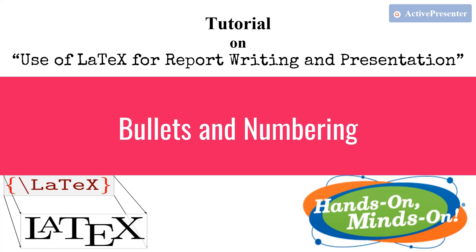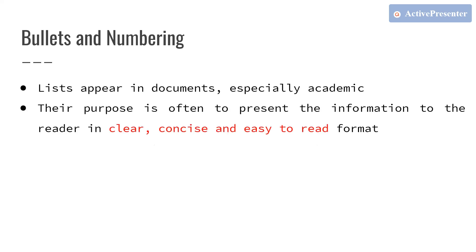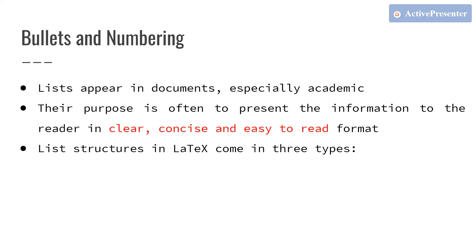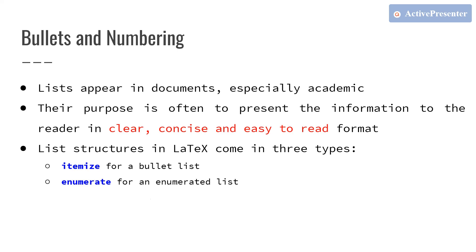Bullets and numbering — you might have already come across this term if you are a regular user of MS Word. Bullets and numbering let us number or represent text in a point-wise fashion. However, in LaTeX, bullets are referred to as unordered lists and numbering is referred to as ordered lists. Lists in LaTeX come in three types: itemized list (bulleted/unordered), enumerated list (numbered/ordered), and descriptive list.